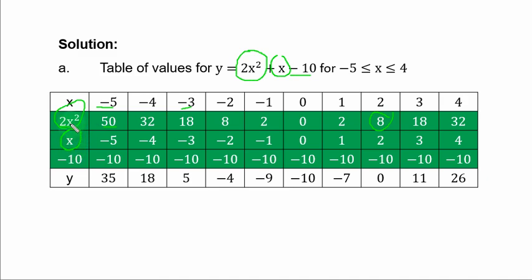Now, s remains the same. Minus 5 to plus 4 comes down. Minus 10 is constant for all. Then you add together. 50 minus 5 is 45, minus 10, you have 35. 32 minus 4, you have 28, minus 10, you have 18. Let's check this: 8 plus 2 is 10, minus 10, 0, and so on.